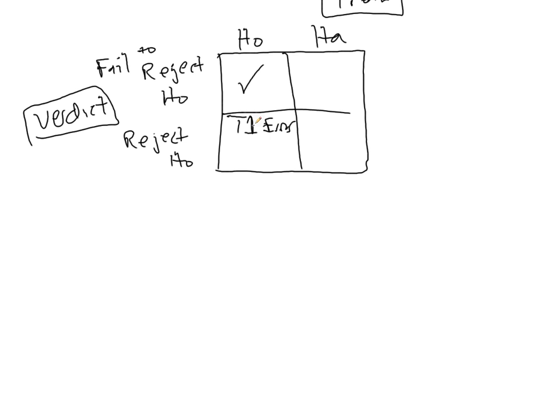That means in this context that we have rejected when we shouldn't have. Similarly, here, if we don't reject H0 and conclude the alternative, and the alternative is in fact true, we've committed an error. This is called a Type II error.